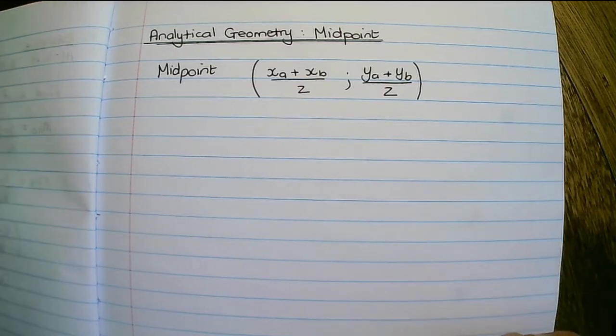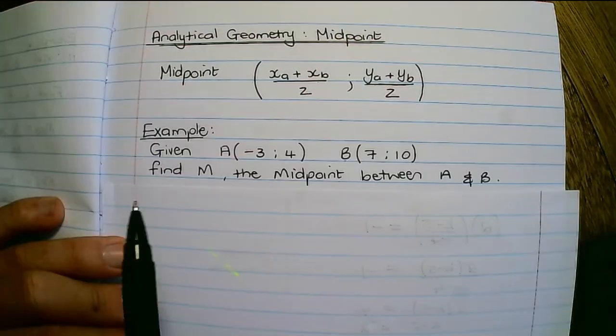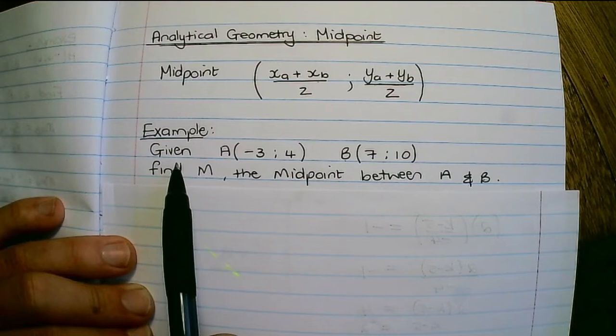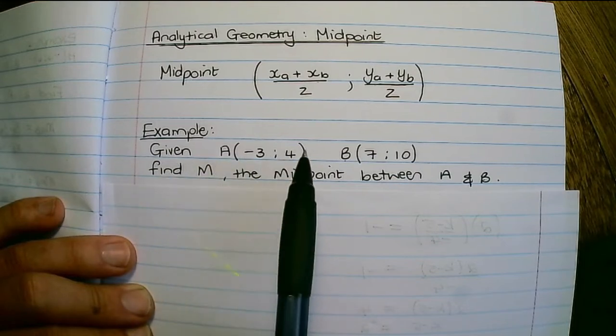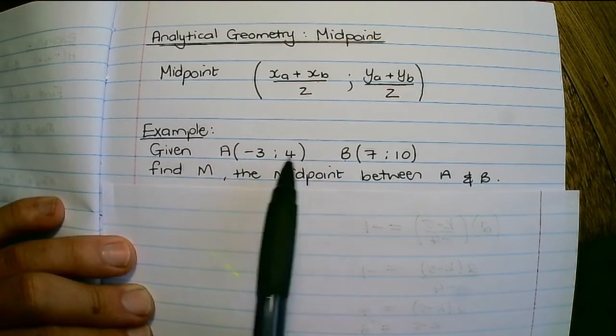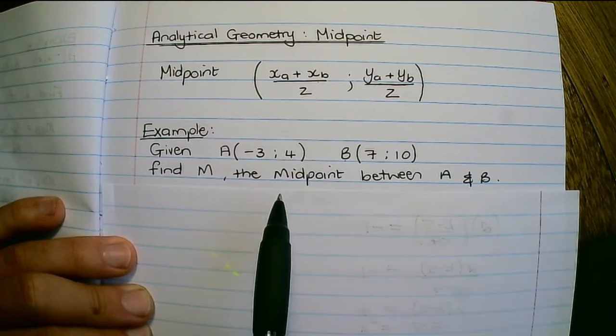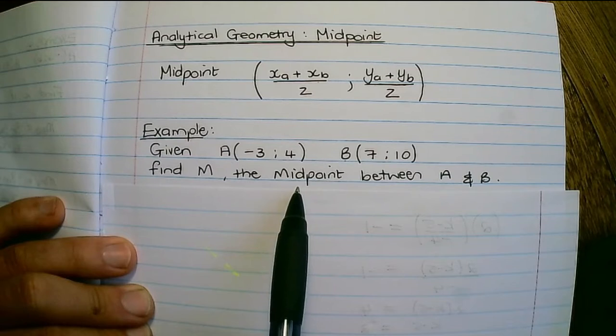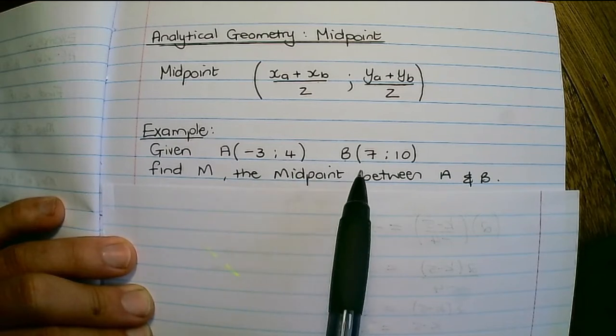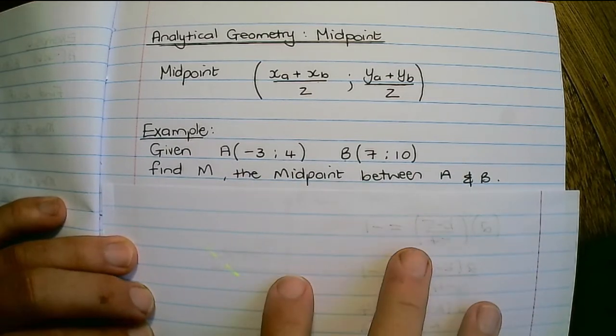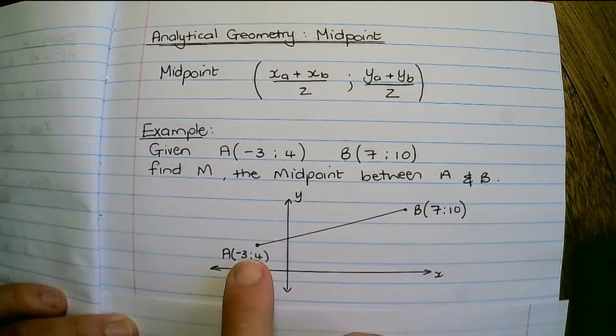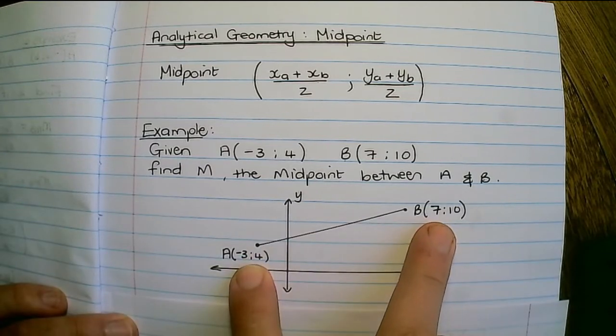Let's look at an example. Let's say you're given two sets of coordinates for point A and for point B and you want to find M, the midpoint between A and B. You are able to find the midpoint without plotting these coordinates, but just for illustration here are the two points represented on the Cartesian plane.